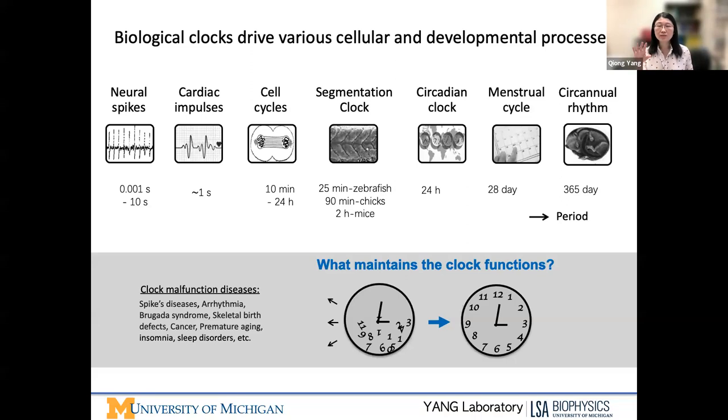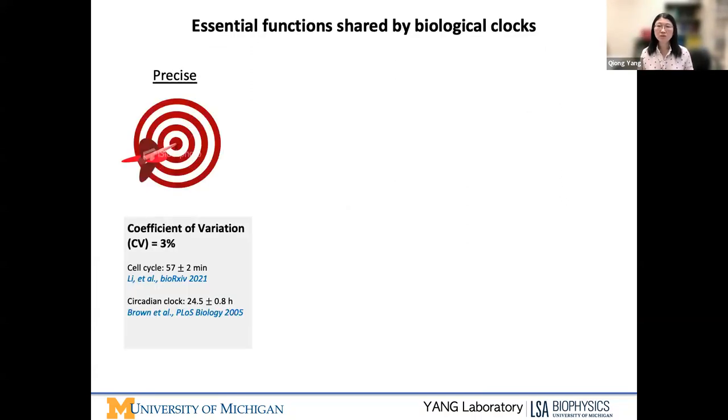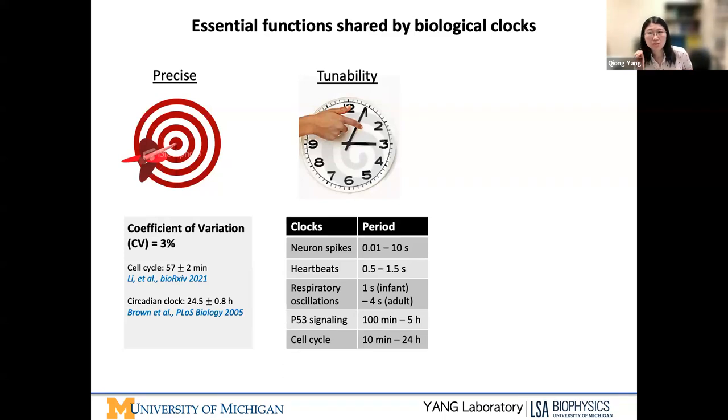Despite the diversity of these clocks, all of them seem to share some fundamental essential functions that are crucial. First of all, as any timing system, you have to be precise for the clock. Studies, including our own lab, have measured the clock oscillations in cell cycles or circadian clock. They seem to be able to maintain the CV as low as 3% among the population of individuals.